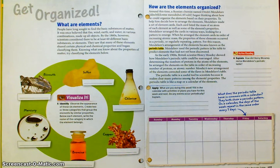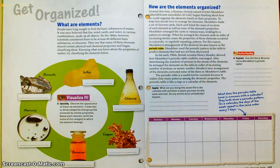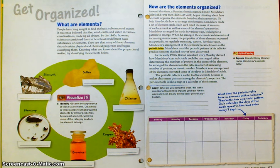On page 126: What are elements? People have long sought to find the basic substances of matter. It was once believed that fire, wind, earth, and water in various combinations made up all objects. But by the 1860s, scientists considered that there were at least 60 different basic substances or elements. They saw that many of these elements shared certain physical and chemical properties and began to classify them.